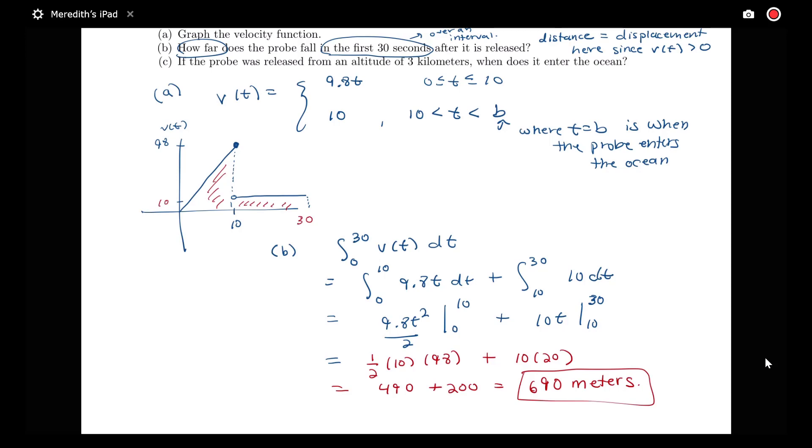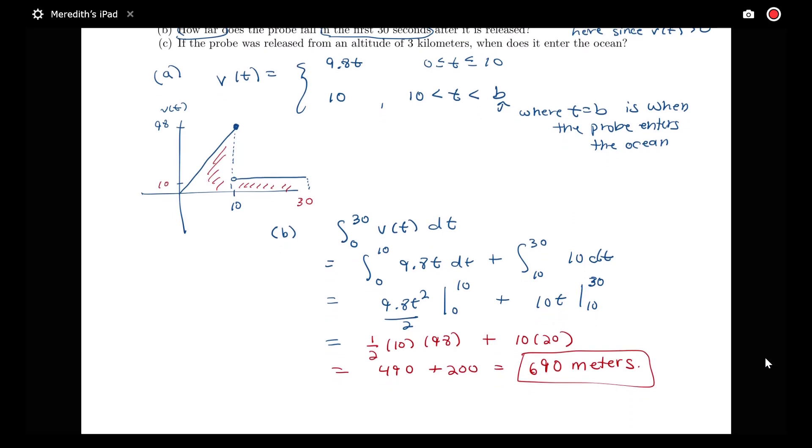Okay, so let's look at answering our last question here. So we found that over the first 30 seconds, this probe fell 690 meters. What about trying to figure out the answer to this next question here, where it says, if the probe was released from an altitude of 3 kilometers, when does it enter the ocean?